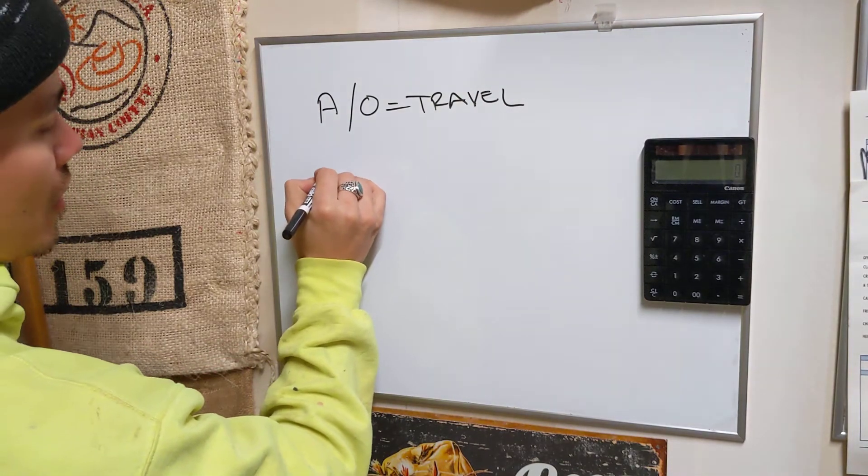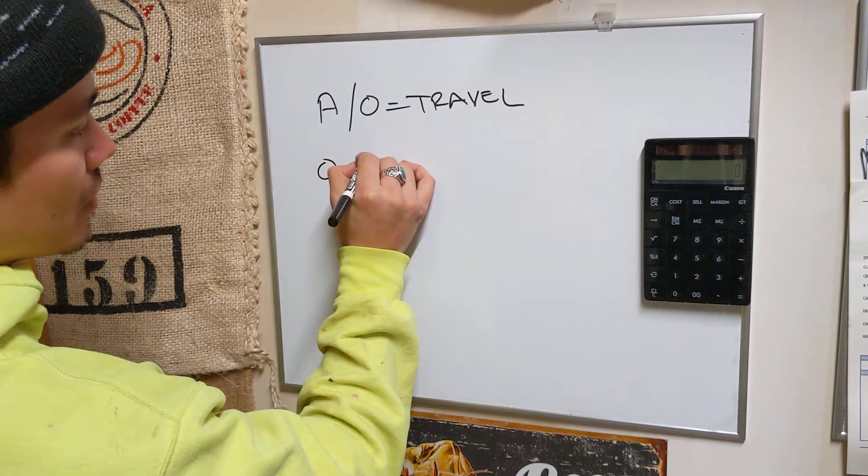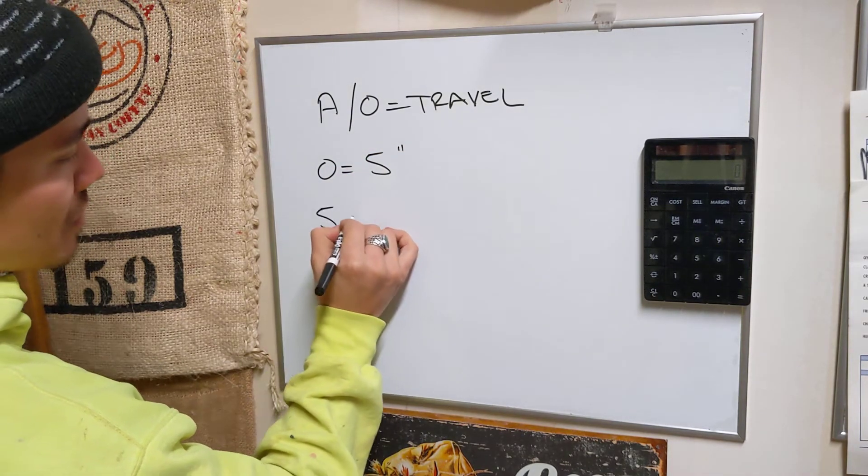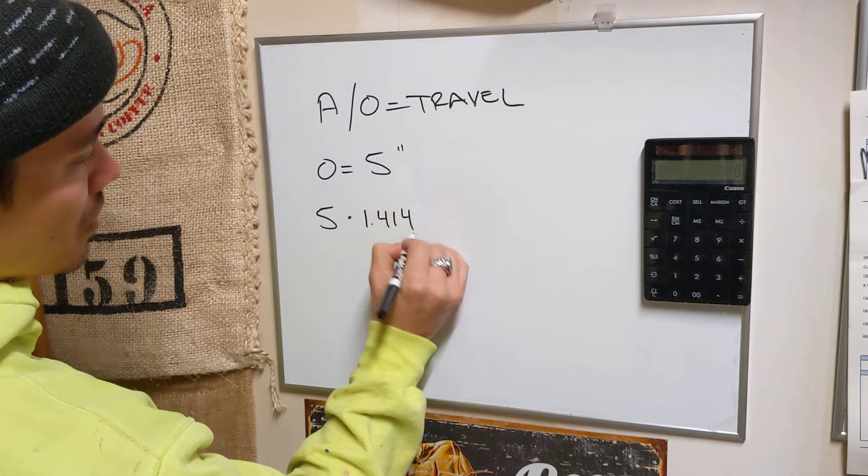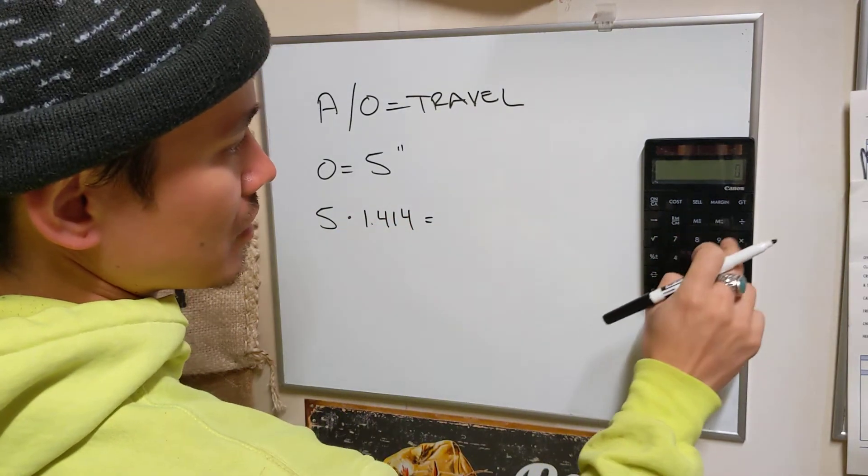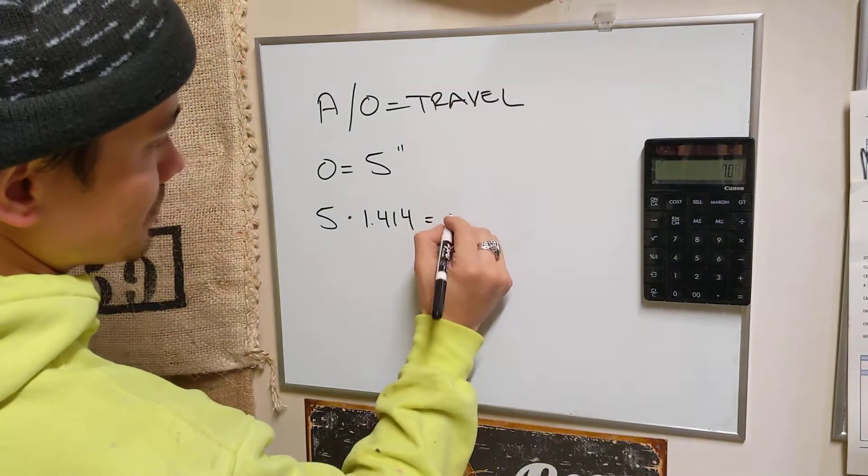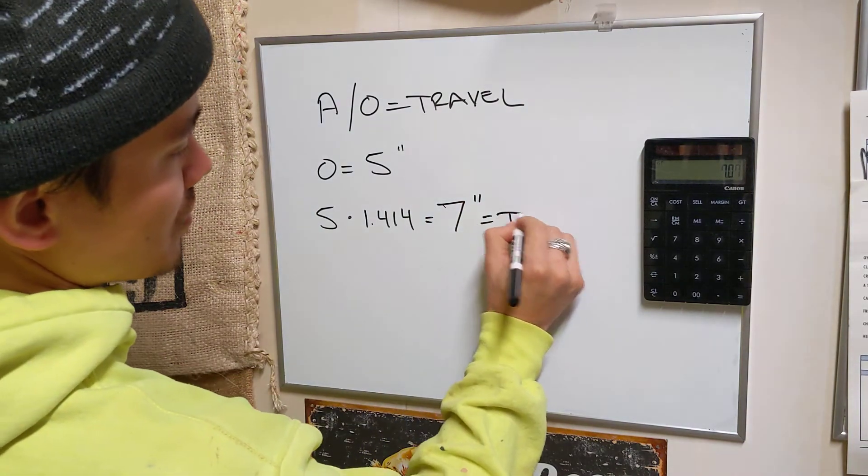So if you know your offset is equal to 5 inches, you simply take 5 inches times 1.414. That equals 7, we'll go with 7 inch travel piece, equals your travel.